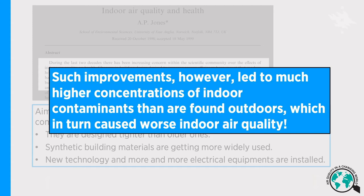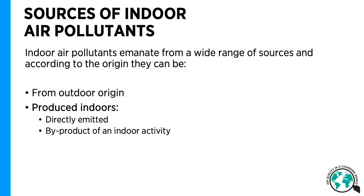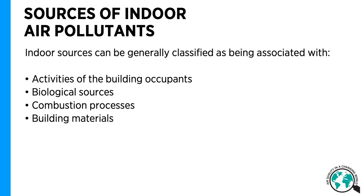In that sense, we need to understand how these indoor pollutants are produced indoors and can be removed so that we have better air quality indoors. The sources of indoor air pollutants can be classified into two main types: those coming from outdoor origin and those produced indoors by indoor processes and byproducts of indoor activities. They can also be classified based on activity in the building, biological sources, the combustion process itself, or the building material. So we have many different ways to classify indoor pollutants.